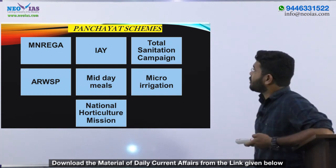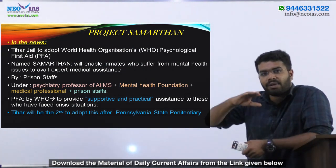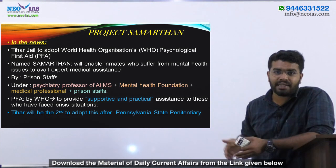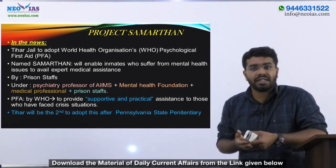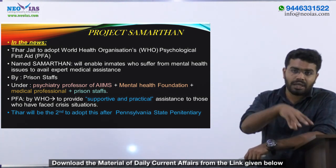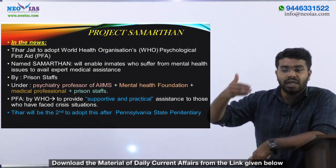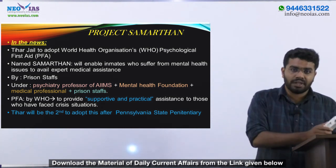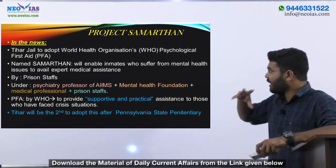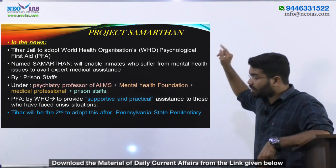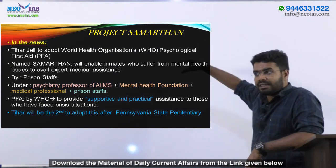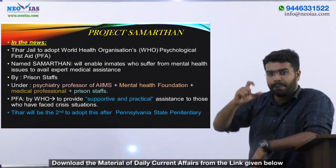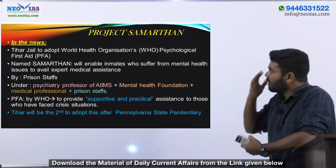Project Samarthan is different from Project Samadhan. Project Samadhan concentrates on Left Wing Extremist states to give awareness, education, and skill training to former Naxalite group members for self-employment. Project Samarthan, on the other hand, relates to the WHO's Psychological First Aid program — PFA — which provides first aid to mentally unstable prison inmates who went through drastic situations that led to their crime.